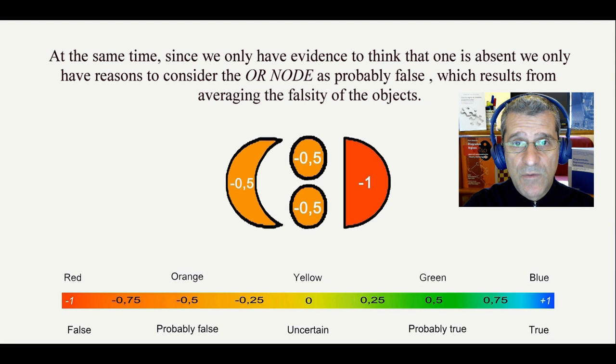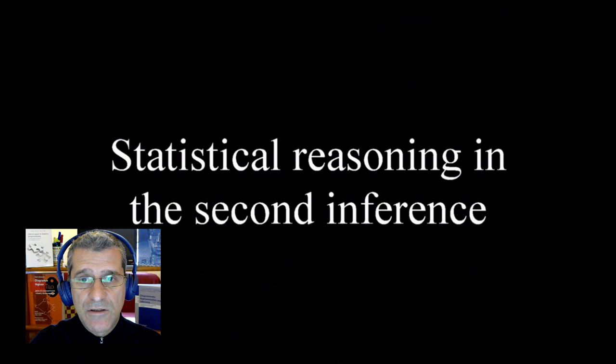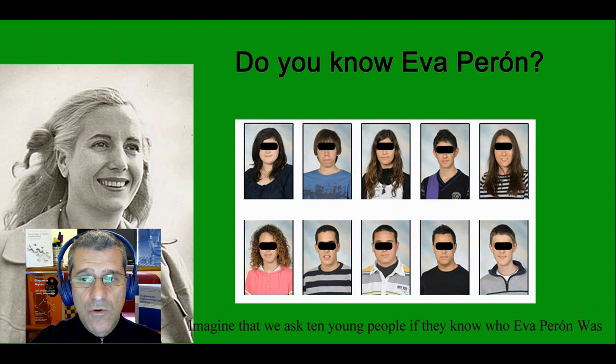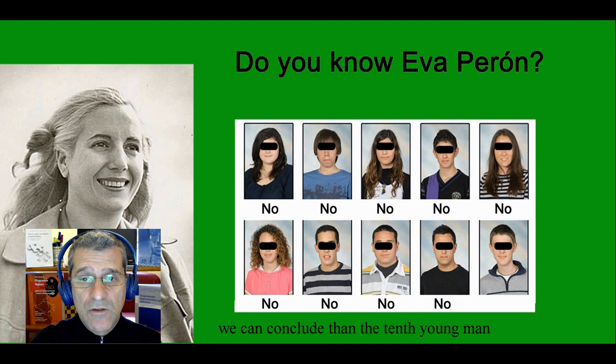Statistical reasoning in the second inference. Imagine that we asked 10 young people if they know who Epaperone was. If 9 of them already answered no, we can conclude that the 10th young man probably does not know her either. How have we come to this conclusion?